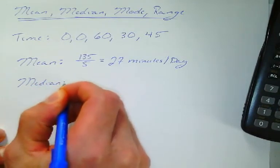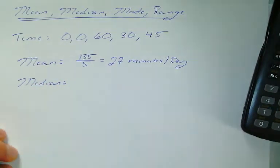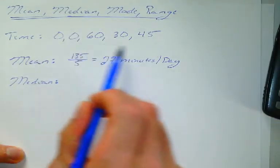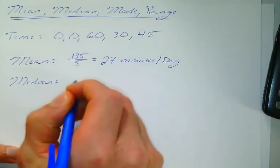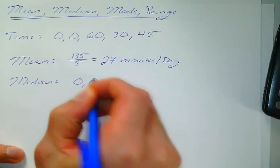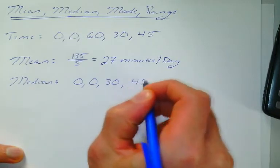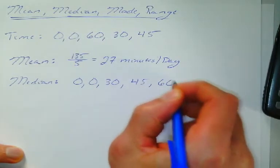Median is the middle term. In other words, 50% of the data points fall above it, 50% of the data points fall below it. Now, before we left school, we talked about how it's important for median that we rearrange our terms in order from least to greatest. So, I'm going to reorder my five terms from least to greatest. So, I've got two zeros. I've got a 30. I've got a 45. And, I have a 60.